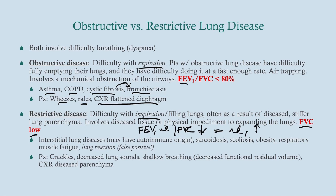There are many causes of restrictive disease. We're talking about interstitial lung disease as an entire class, as well as sarcoidosis, scoliosis, obesity, respiratory muscle fatigue, and lung resection which would give a false positive on spirometry. On exam we see coarse crackles, decreased lung sounds, and shallow breathing because they're having a hard time filling their lungs. Chest x-ray may show diseased parenchyma.